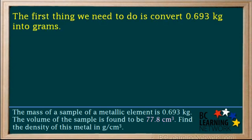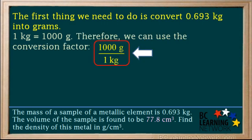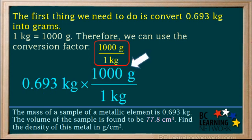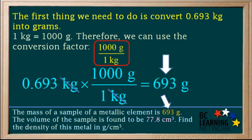The first thing we need to do is to convert 0.693 kilograms into grams. Here we are going to use a simple method for converting kilograms to grams. Since 1 kilogram is equal to 1000 grams, we can use the conversion factor 1000 grams to 1 kilogram. Write 0.693 kilograms, multiply by the conversion factor, cancel out the kilograms. 0.693 times 1000 is equal to 693 grams.